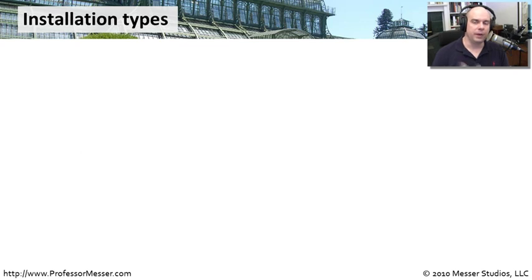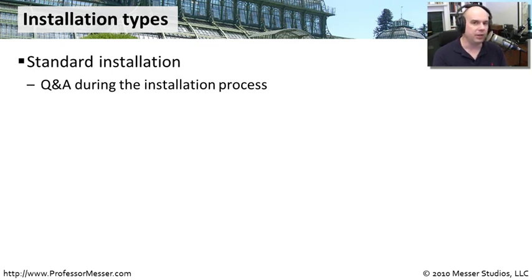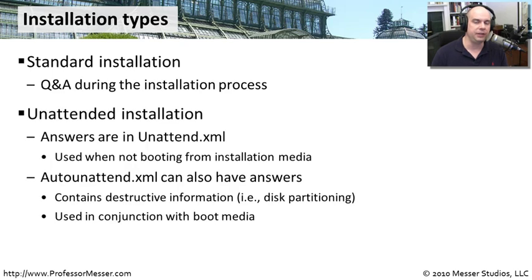There are a few ways to go through a clean installation of Windows 7. One is just the standard install — you put in the DVD-ROM, start the installation media, and it asks you a number of questions: you have to agree to the license, put in your time zone, and more. But in a large environment, you may not want to sit there answering lots of questions just to get the installation done.